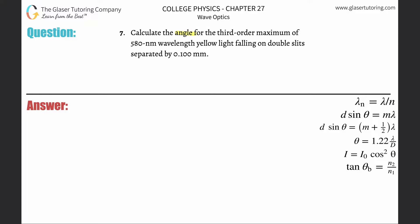Number seven: calculate the angle for the third-order maximum of 580 nanometer wavelength yellow light falling on double slits separated by 0.1 millimeters. This says maximum, therefore we're dealing with constructive interference. If it were a minimum, it would be destructive interference.